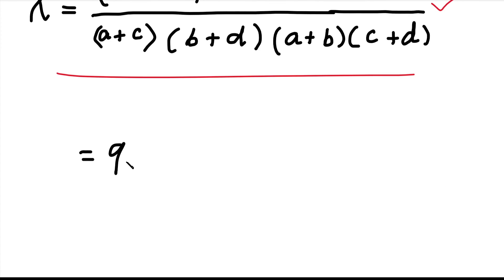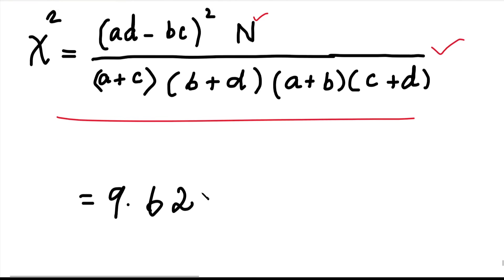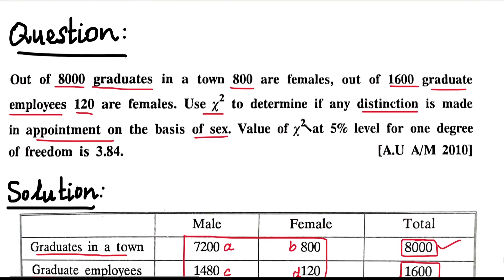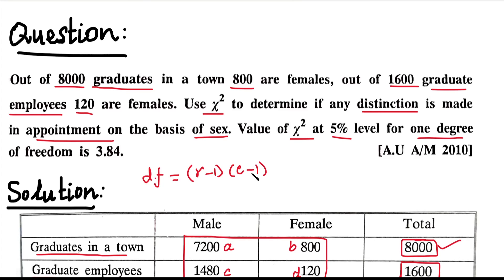This gives us the calculated value of Chi-square as 9.62. For the degrees of freedom, since we have two rows and two columns, the degrees of freedom equals (2 minus 1) times (2 minus 1) equals 1. The table value of Chi-square at the 5% level for 1 degree of freedom is 3.84.